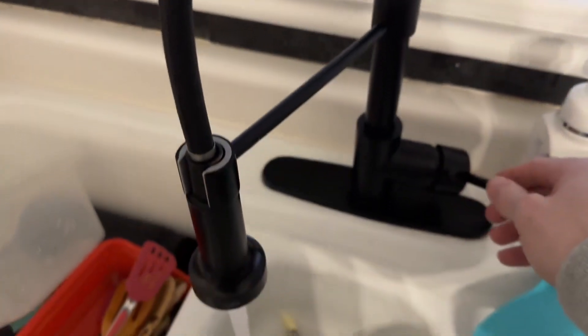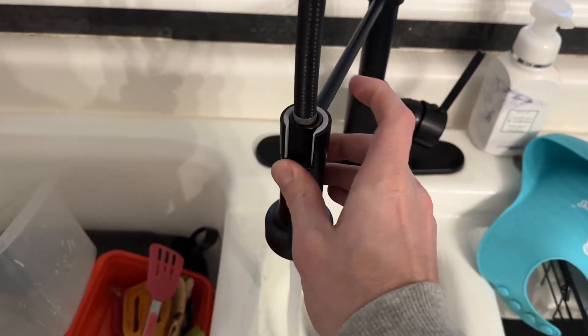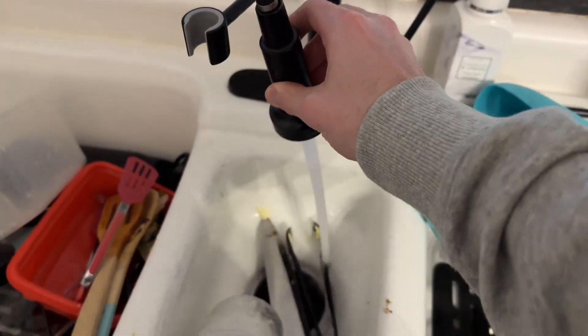Today we're looking at this kitchen faucet. The thing I like about it is it's a modern look but also kind of farmhouse. You can see you can pull this down here and you have two different settings.